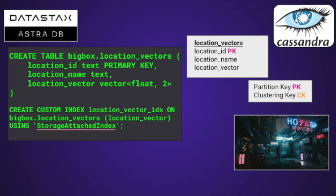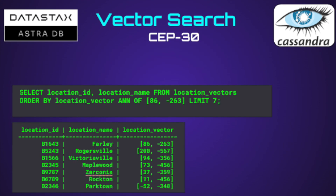To make this happen, we're also going to have to use a custom secondary index — in this case, the new storage attached index. When we run that query, we'll do a SELECT and FROM, but we won't do a WHERE. Instead, we'll have an ORDER BY and use the new ANN OF clause, then provide a vector with a LIMIT to pull our data back. As you can see, this brings back our data sorted by how close they are to each of our city vectors, so we can quickly identify cities closest to the ones we're starting with.